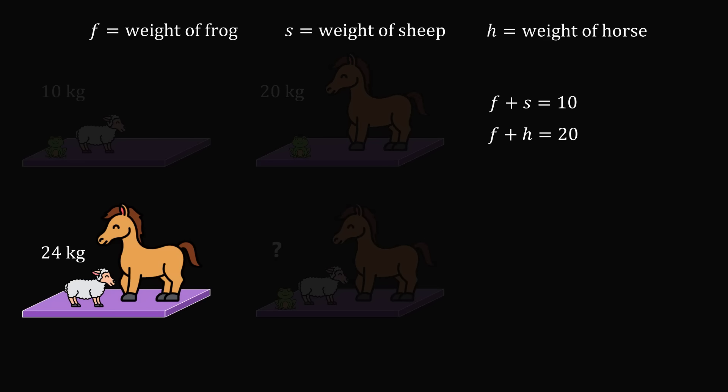The third diagram shows the weight of a sheep and a horse, which is 24 kilograms, which means S plus H is equal to 24.